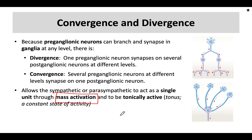That divergence gives us mass activation where we can activate more than one region at the same time. We do see this, for example, in some of the digestive functions where we're going to activate a large segment of tissue in a coordinated fashion. Whereas convergence is more likely seen when information is sent to the brain, perhaps in the sensory nervous system. These patterns of activation are critical to how the autonomic nervous system functions, but also critical to other regions of the nervous system.